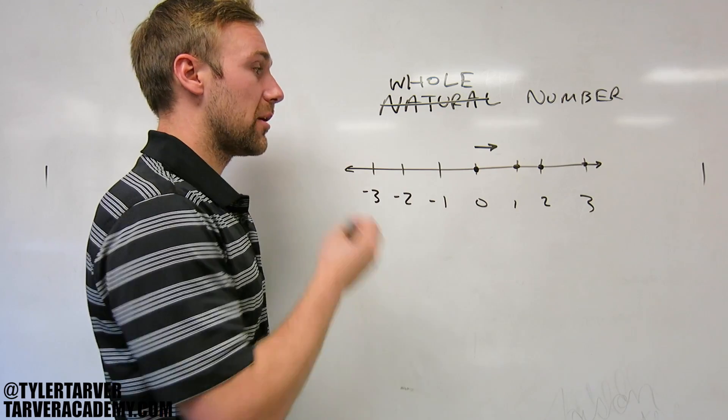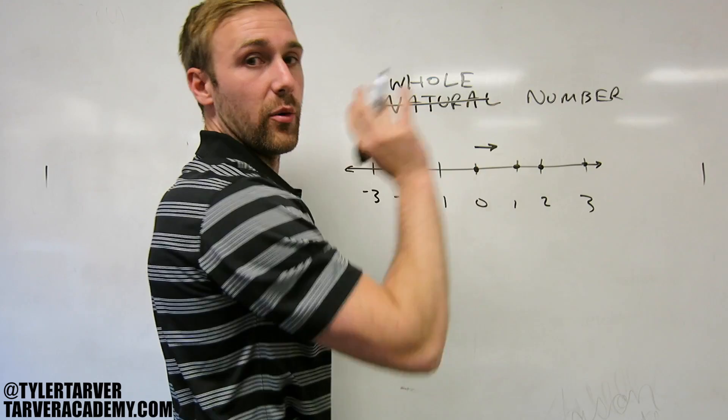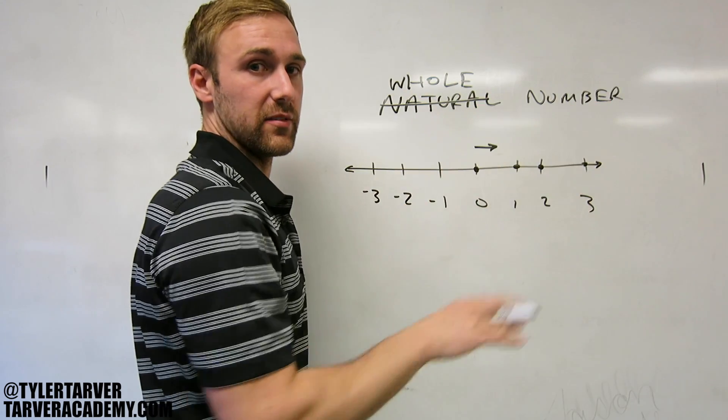So your list of whole numbers would be zero, 1, 2, 3, 4, 5, 6, 7, all the way up as far as you can count with a positive number.